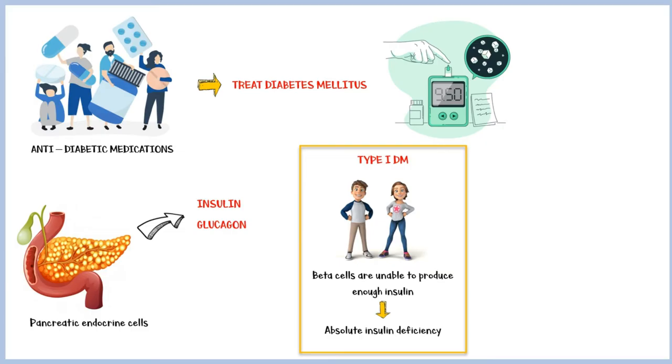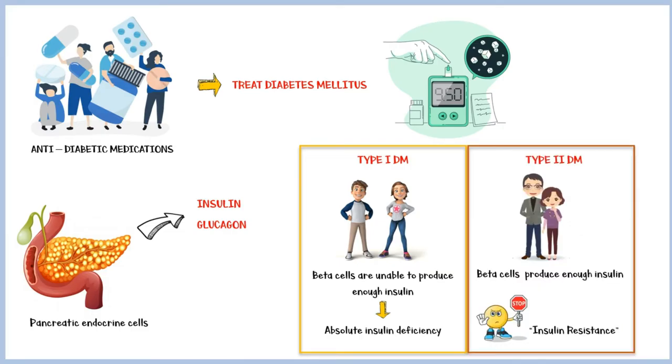By contrast, type 2 diabetes typically starts in middle ages. In these individuals, beta cells produce enough insulin, but the peripheral cells do not respond as well to it, leading to insulin resistance.